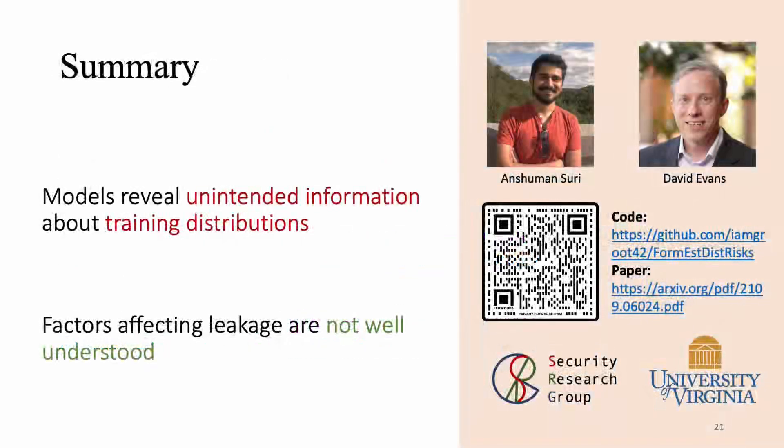In summary, machine learning models seem to leak unintended information about the training distributions, not just the training data sets as we have known so far. And the factors that affect this leakage are not very well understood. If you'd like to know more about our work, you can scan the QR code here and here are the links to our paper and code base. Thank you.